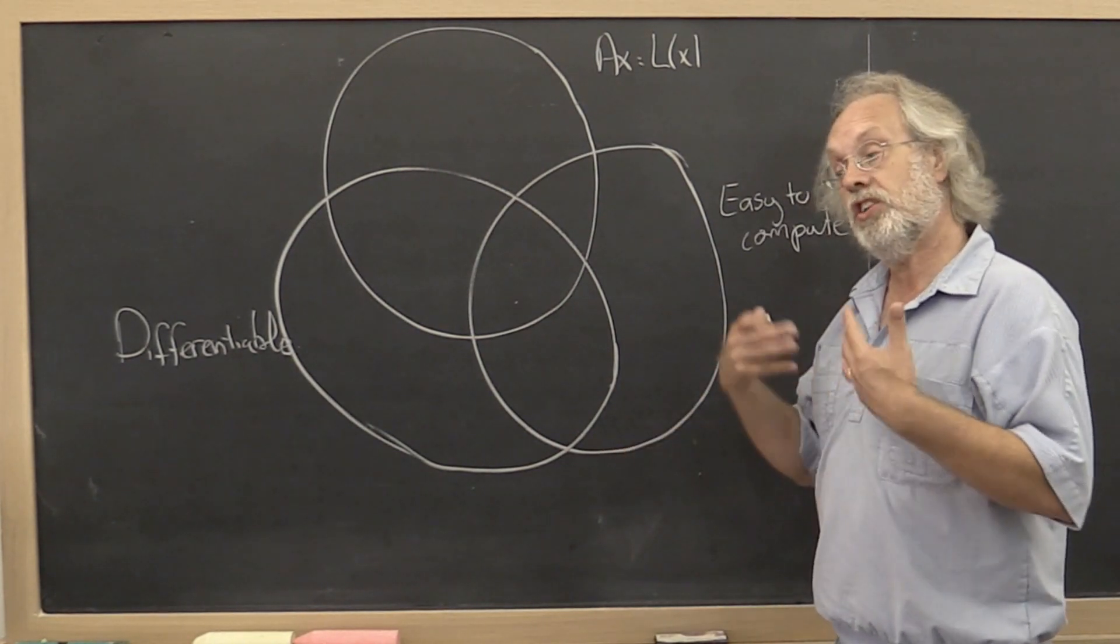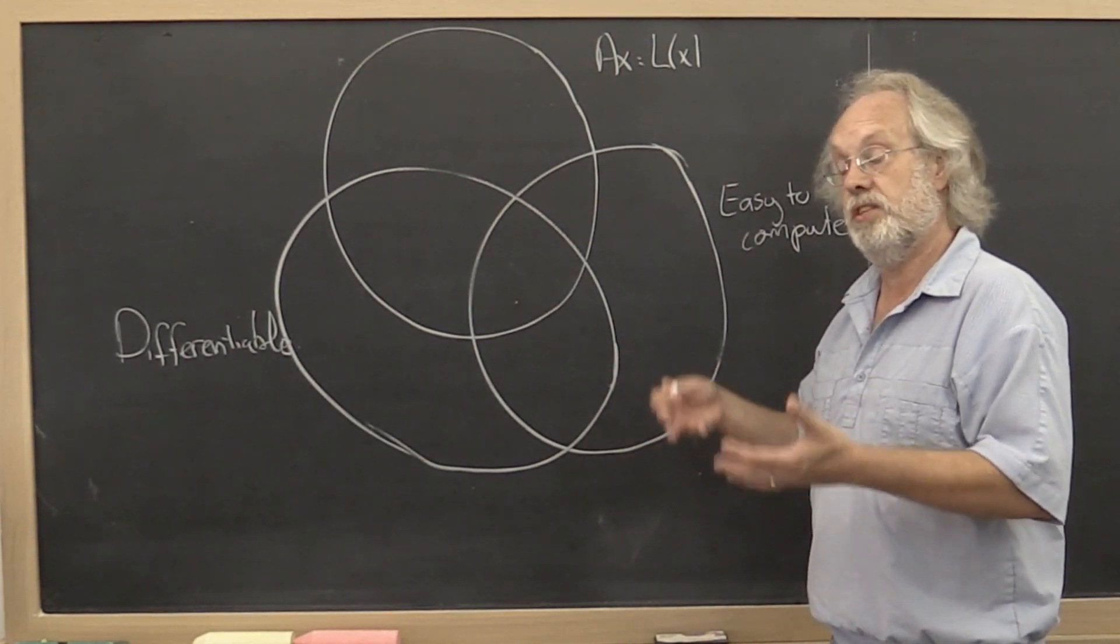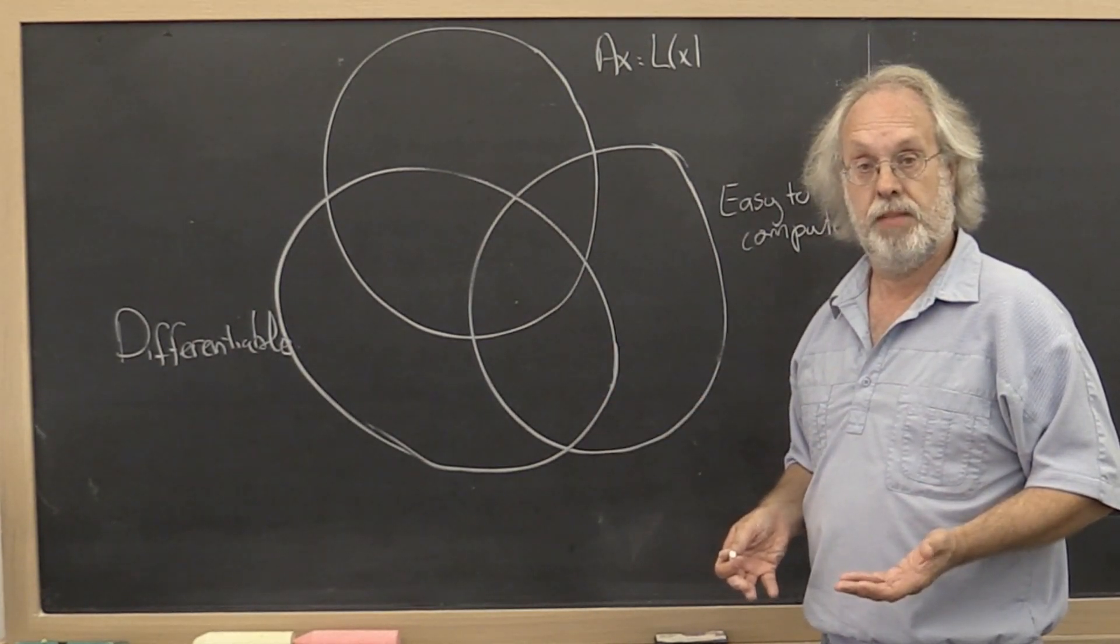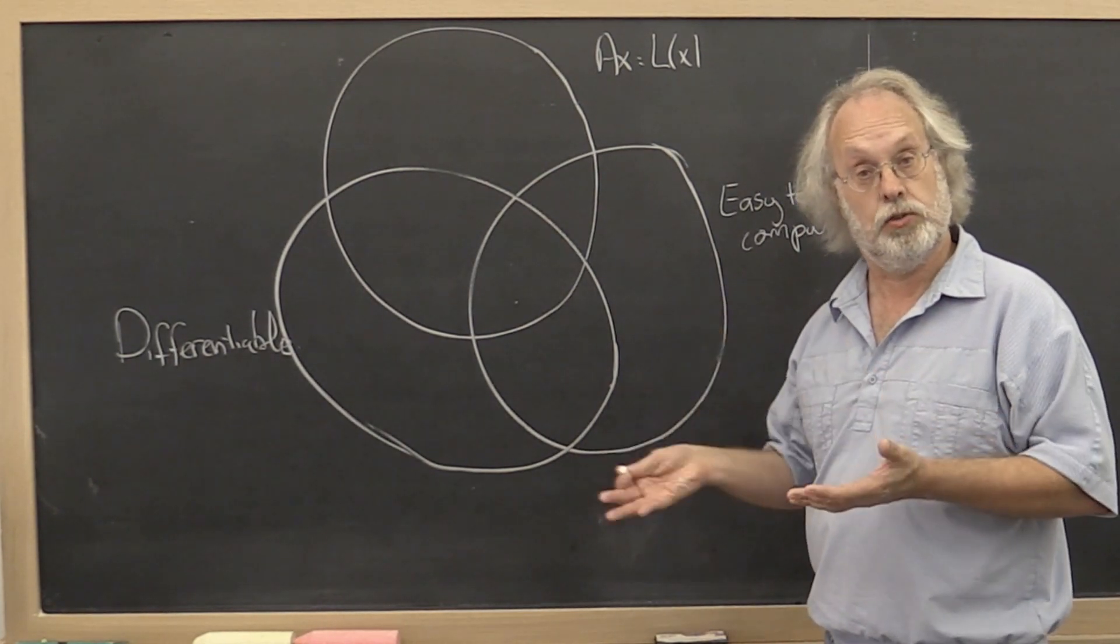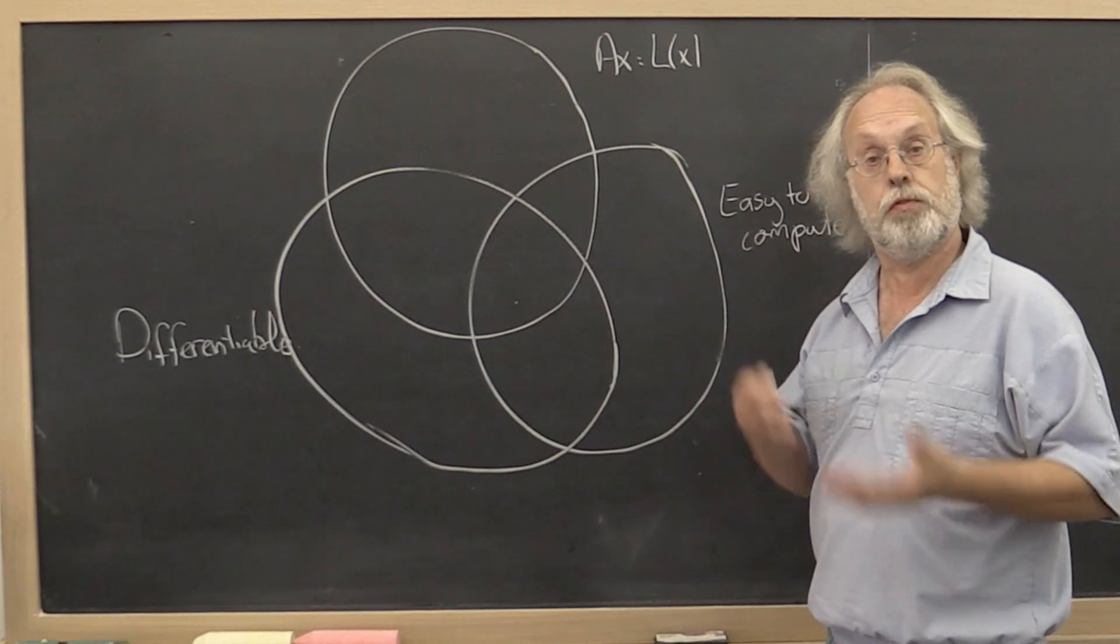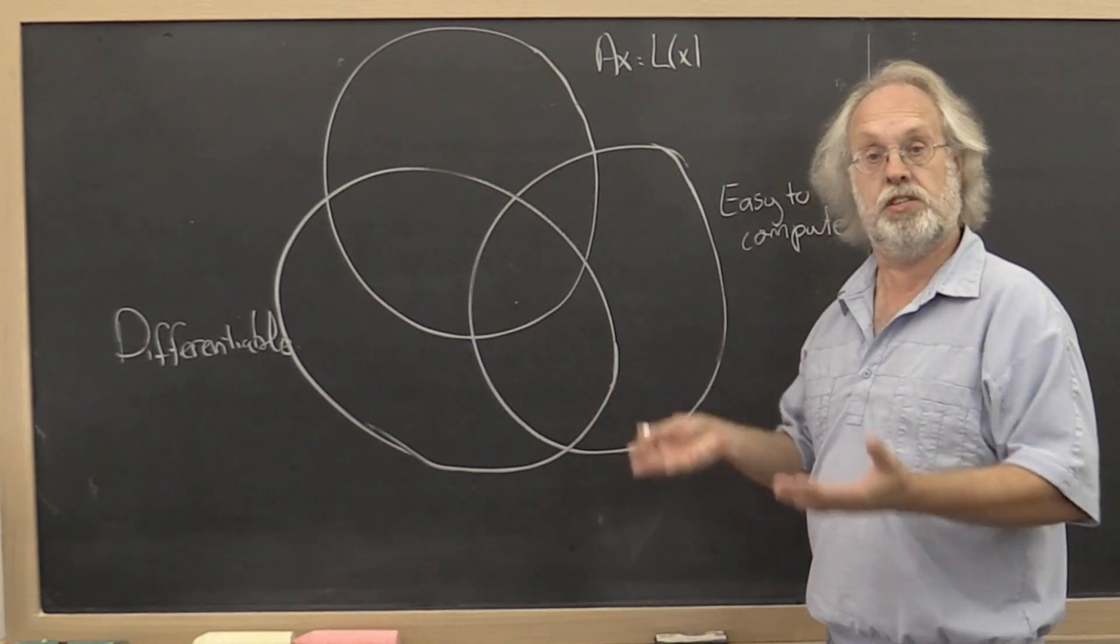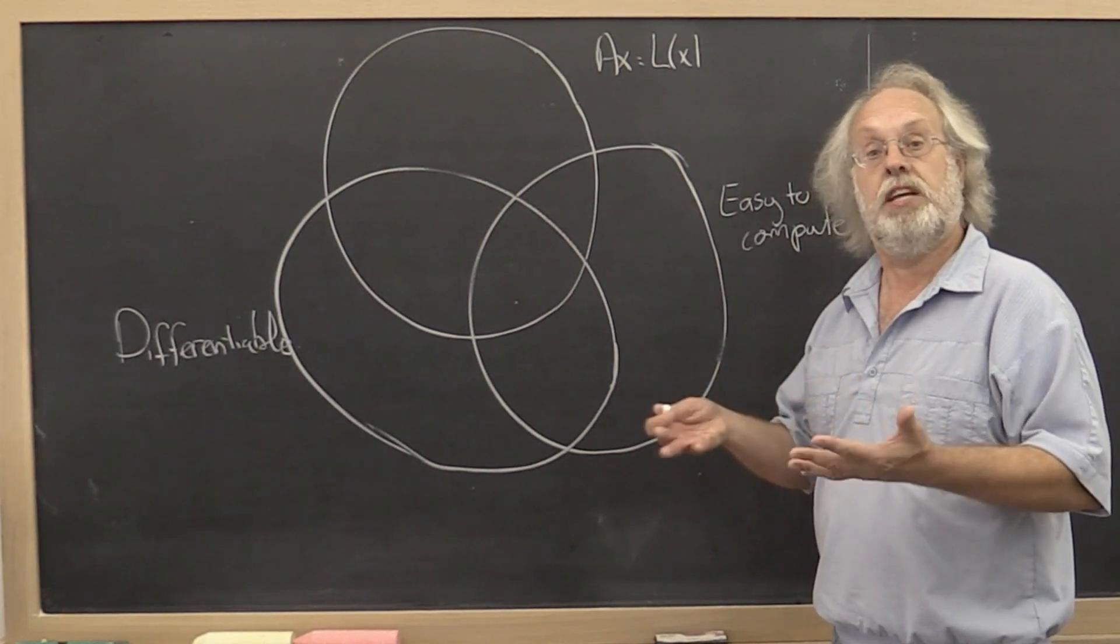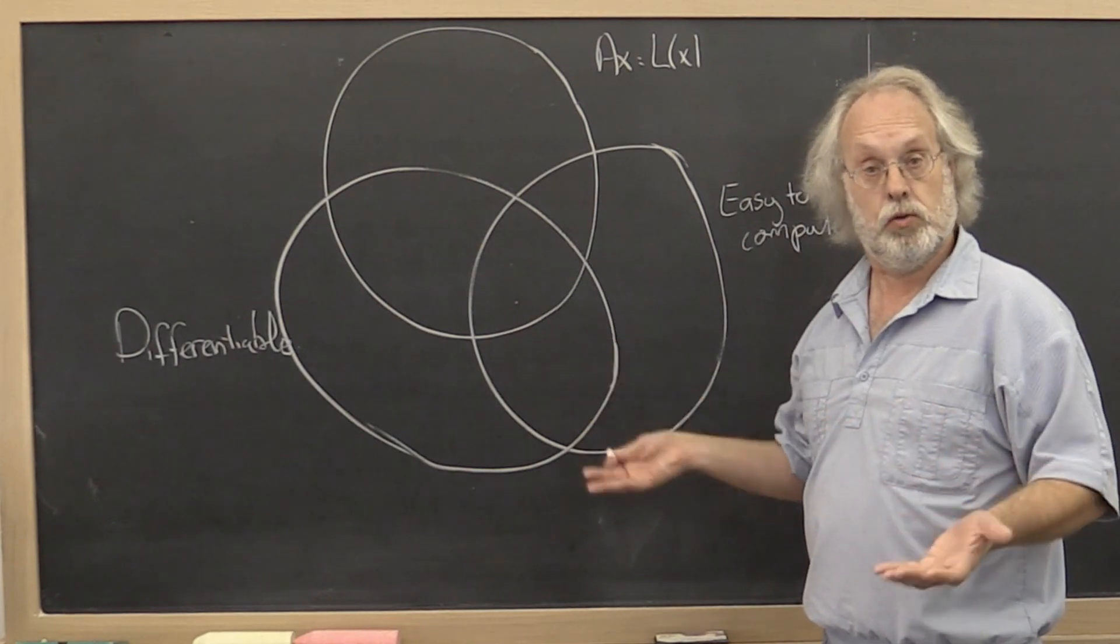So we're going to continuously find ourselves looking for that norm that works for this particular situation. Now, fortunately, just like we have equivalence of norms for vector norms, we have equivalence of norms for matrix norms. So at least once we find the norm that works for our situation, if a matrix happens to be large in that norm, then we know it's large in other norms.